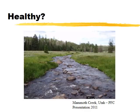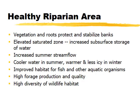We're going to look at what's healthy and what's not healthy in riparian systems, focusing mostly on lotic systems. Take a look at this picture — would you say this is healthy or not healthy? Most people would say it looks pretty healthy, but what about it makes it healthy? Characteristics of healthy riparian areas include having vegetation and roots that really protect and stabilize the stream bank.